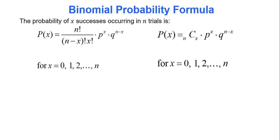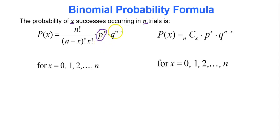If an experiment is binomial, we can calculate the probability of a certain number of successes using a formula or Google Sheets. The formula states: the probability of X successes in N trials is computed by taking the probability of a success raised to the number of successes. In the previous question, I wanted one correct answer so 1/4 appeared once in each calculation.